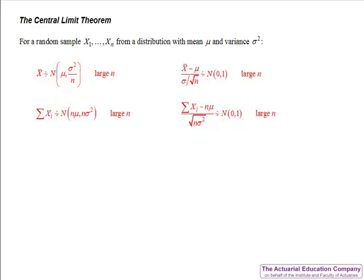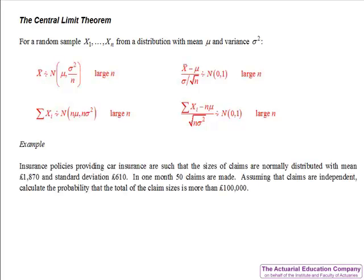Let's have a look at an example involving summations. Insurance policies providing car insurance are such that the size of claims are normally distributed with mean 1870 and standard deviation 610. In one month, 50 claims are made. Assuming that the claims are independent, calculate the probability that the total of the claim sizes is more than 100,000 pounds.